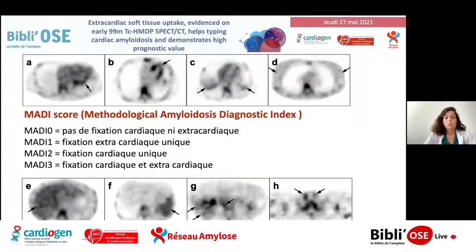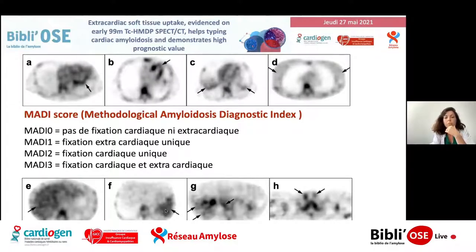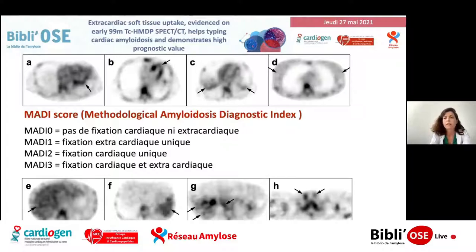Voici le score MADI, assez simple à calculer. Score 0 : aucune fixation, ni cardiaque ni extracardiaque. Score MADI 1 : uniquement des fixations extracardiaques — par exemple fixation pulmonaire, des tissus mous, hépatiques, spléniques, du péritoine, ou de la thyroïde. Le score MADI 2 correspond à une fixation cardiaque unique sans fixation extracardiaque. Et le MADI 3, fixation cardiaque et extracardiaque.